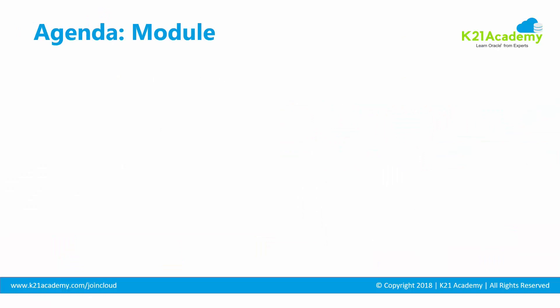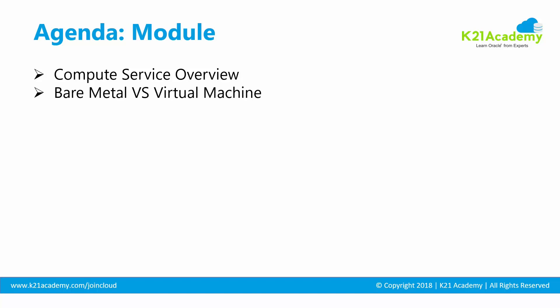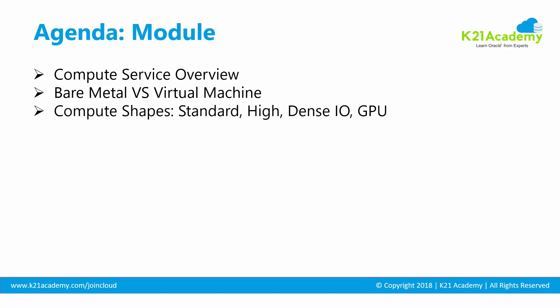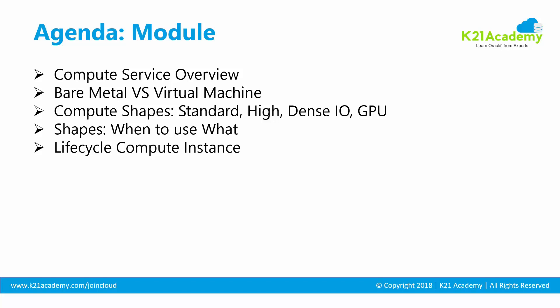Before proceeding further, let's see what topics we are going to cover. We are going to begin with compute service overview or instance overview, then look at two different types of compute: one is bare metal or without virtualization, and the second is virtual machine. Then we are going to look at compute shapes — there are different shapes depending on whether you are going for bare metal or virtual machine.